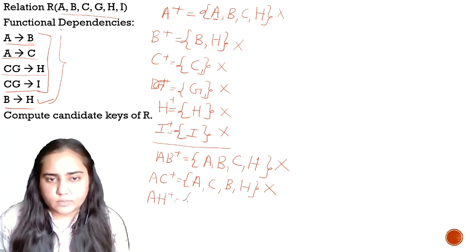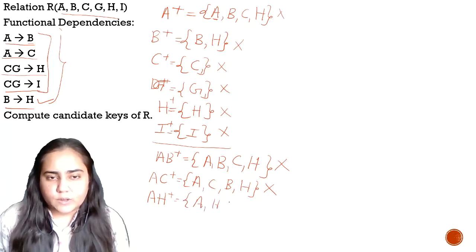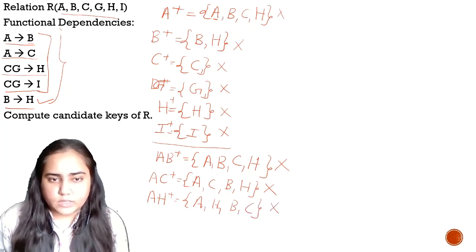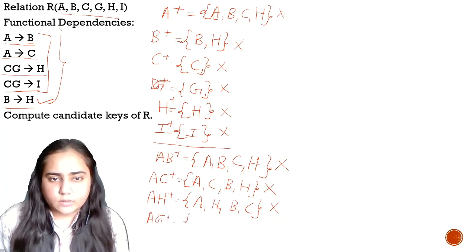Next, let's do AH-plus. I have added A and H. Because of A, I can add B and C. And that's all — AH is not a candidate key. Next I have AG-plus. So I'm going to add A and G.